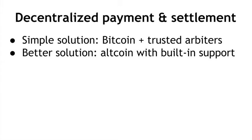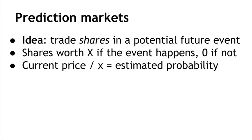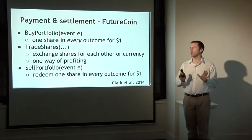Payment and settlement is the easiest given Bitcoin — we can simply use Bitcoin to do payment. In the simplest solution we could use trusted arbiters, doing escrow transactions where the arbiter enforces the contract. A better solution would be to build an altcoin with explicit support for prediction markets. There's a proposal for doing this called FutureCoin — it hasn't actually been built — which adds a couple of transaction types in addition to normal cryptocurrency sales.